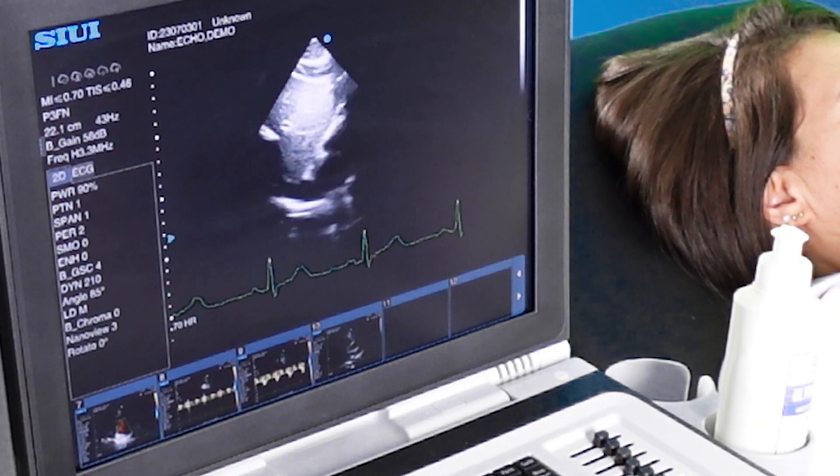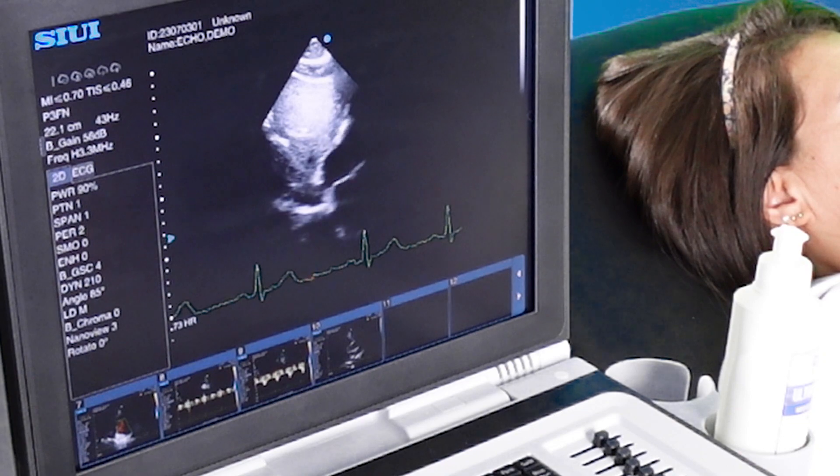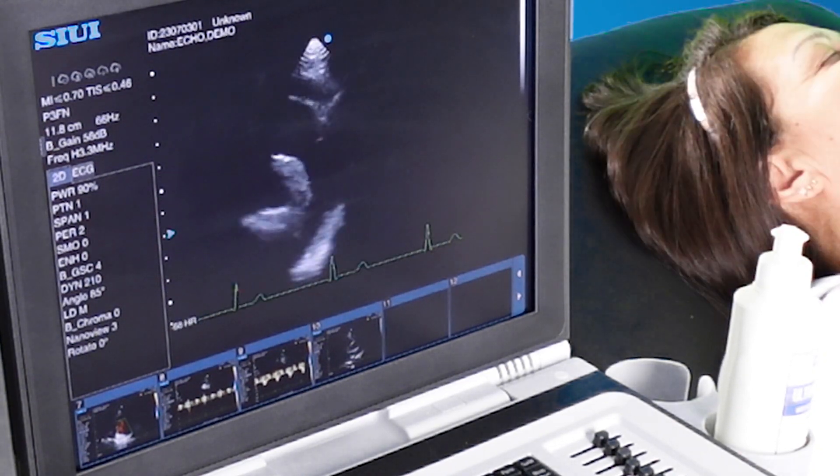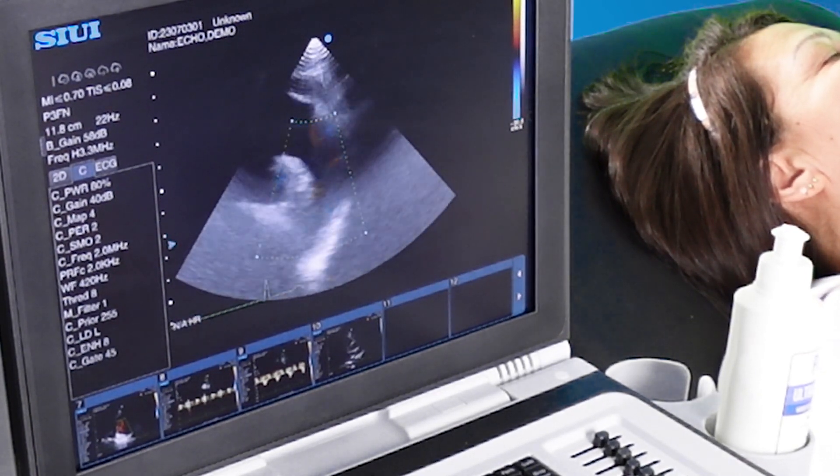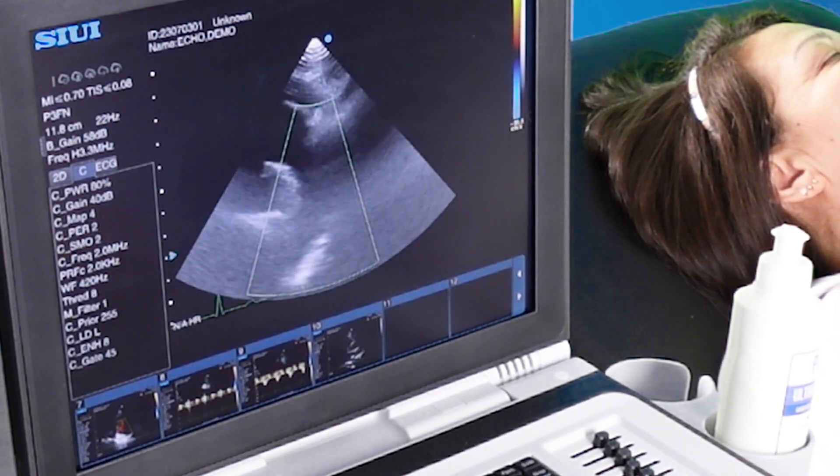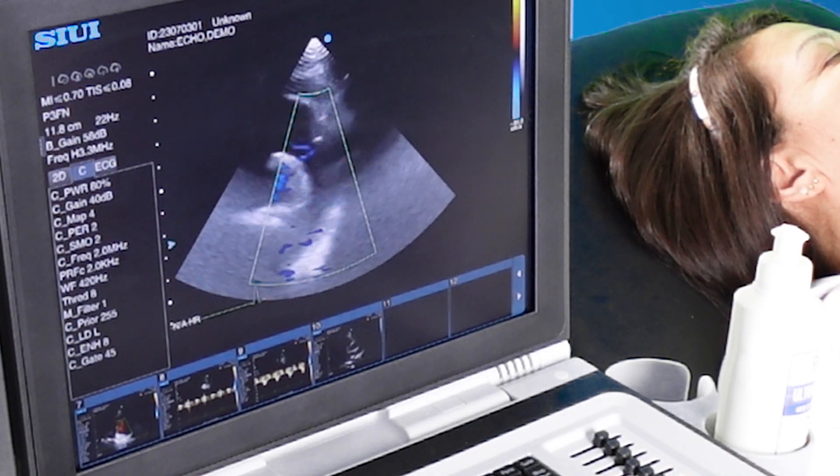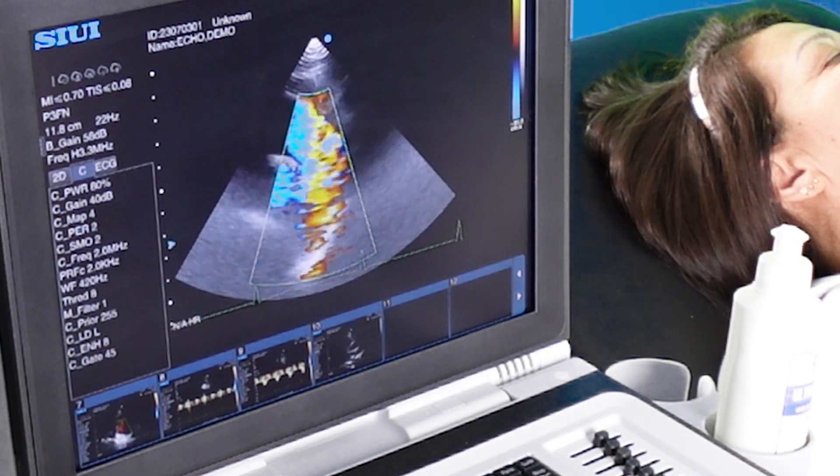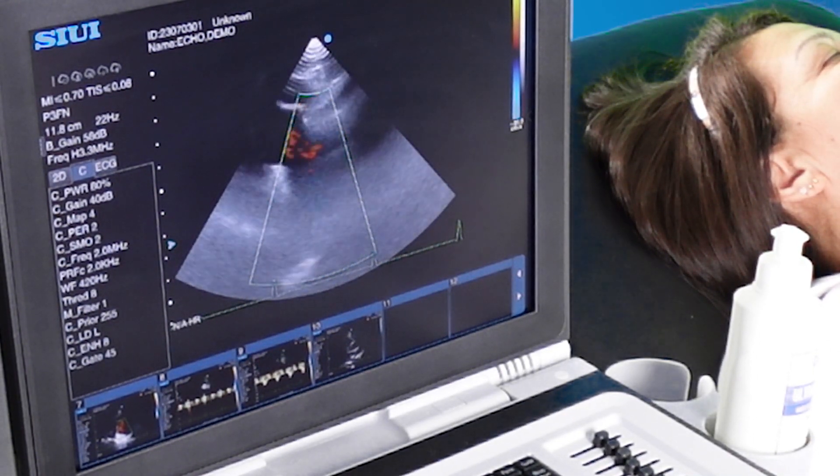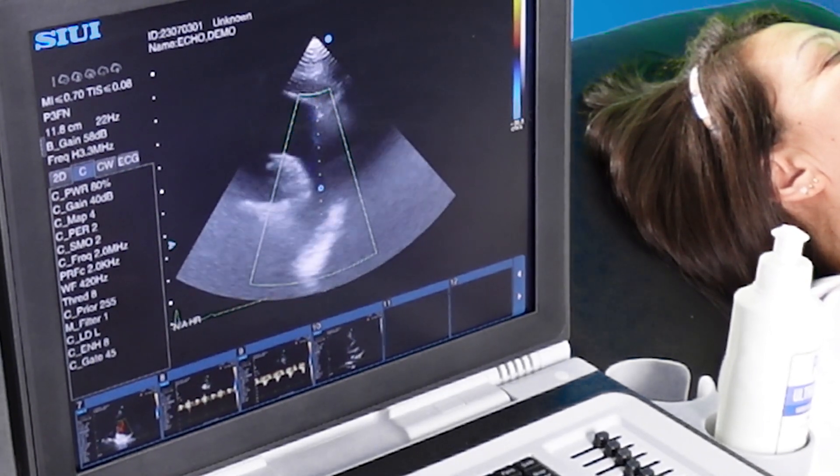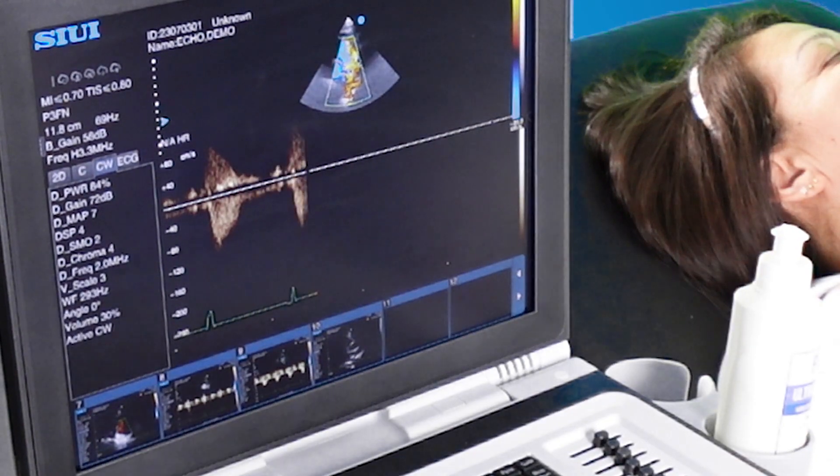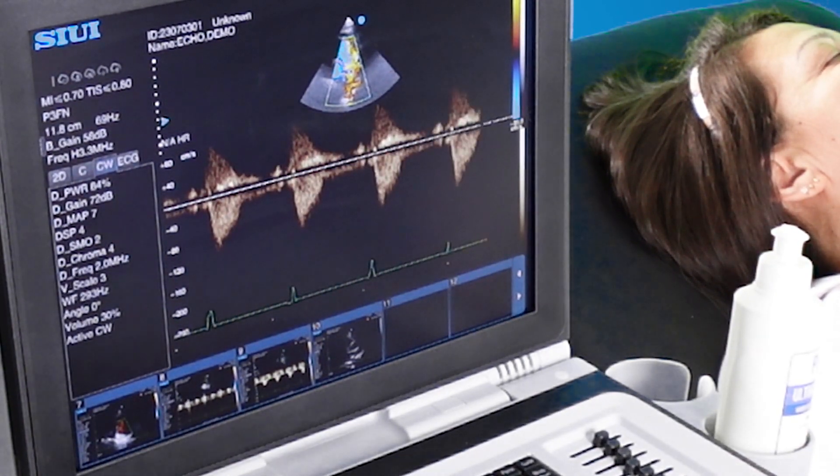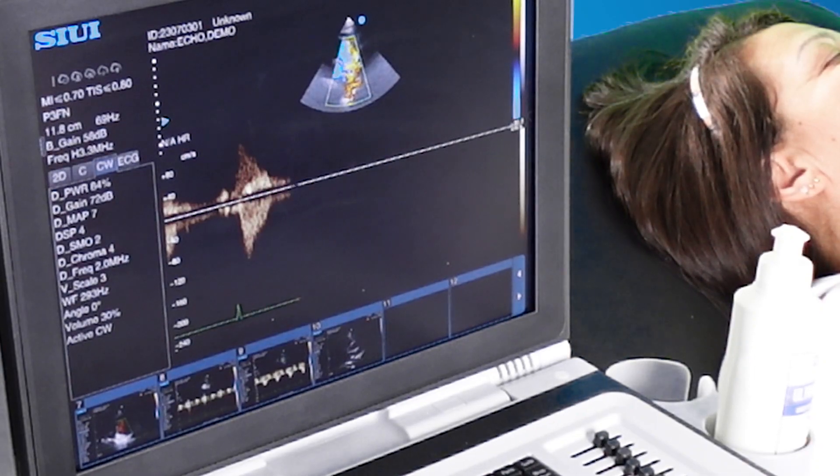This is the inferior vena cava where we check for inspiratory collapse. Aortic arch view now, and with color Doppler we can see blood flow through the aorta. Using continuous wave Doppler, we can look for the peak velocity and also check for any continuous flow throughout the cardiac cycle.